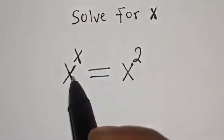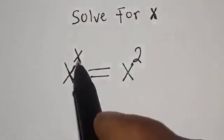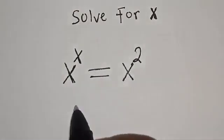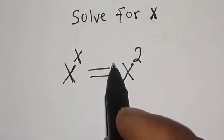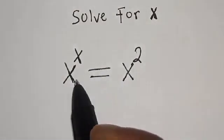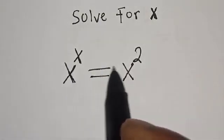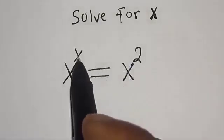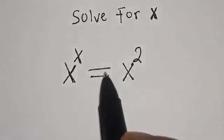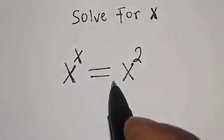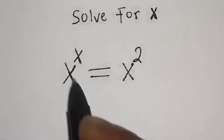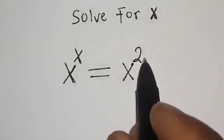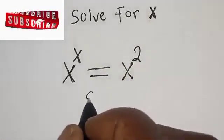Solve for x: s raised to power s is equal to s squared. Hi everyone, welcome to my class. In this class we want to look at how we can quickly find the value of s from this given exponential equation, s raised to power s is equal to s squared. Before we proceed, please don't forget to like, share, comment, and subscribe. Thank you. Solution.